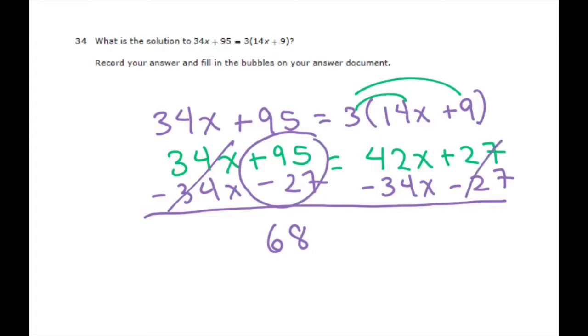All right, these two cancel. And 42 minus 34 equals 8.